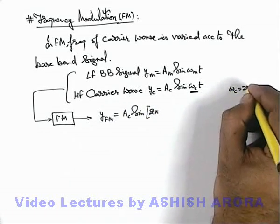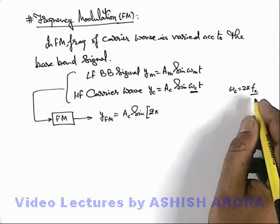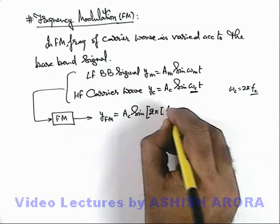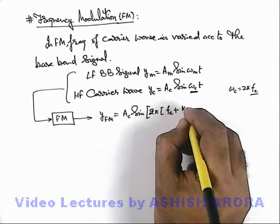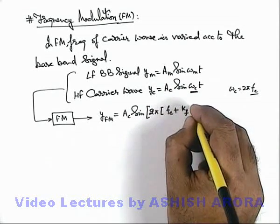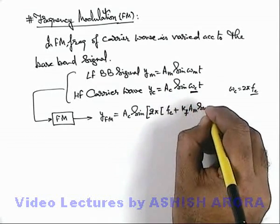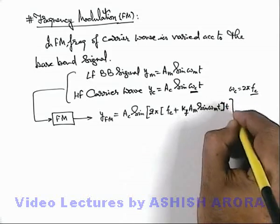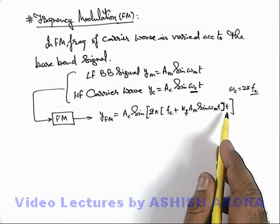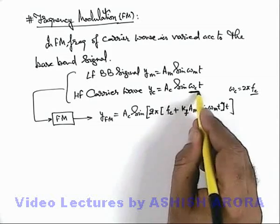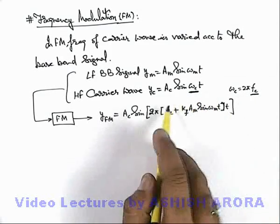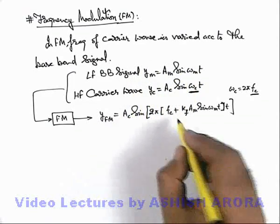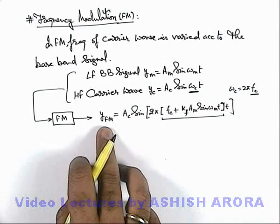Taking omega_c as 2 pi f_c, where f_c is the frequency in hertz of the carrier wave, the FM output is written as A_c sine of 2 pi times the quantity f_c plus k_f times the baseband signal A_m sine of omega_m times t, all multiplied by t. This is the frequency modulated signal where we have changed the frequency of carrier wave f_c by mixing it with the baseband signal, so all the information of the baseband signal is embedded in the frequency of the FM signal, which can be extracted at the reception end.